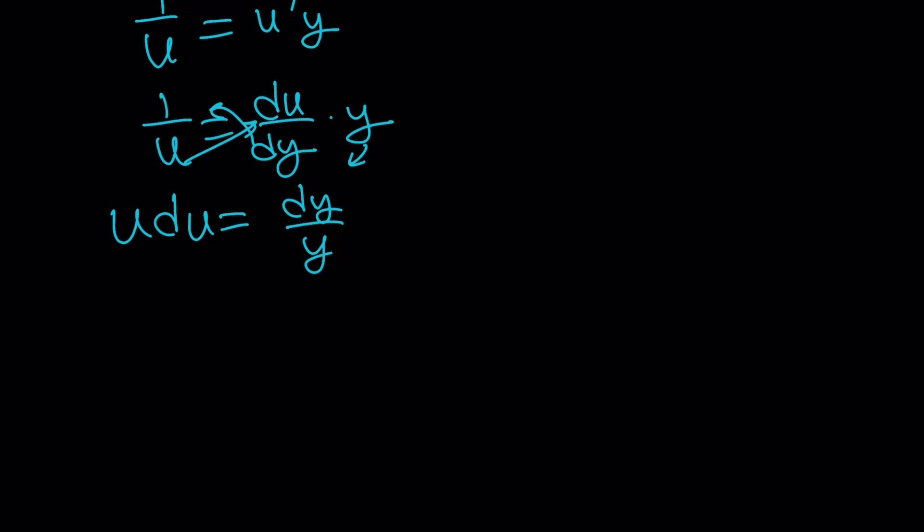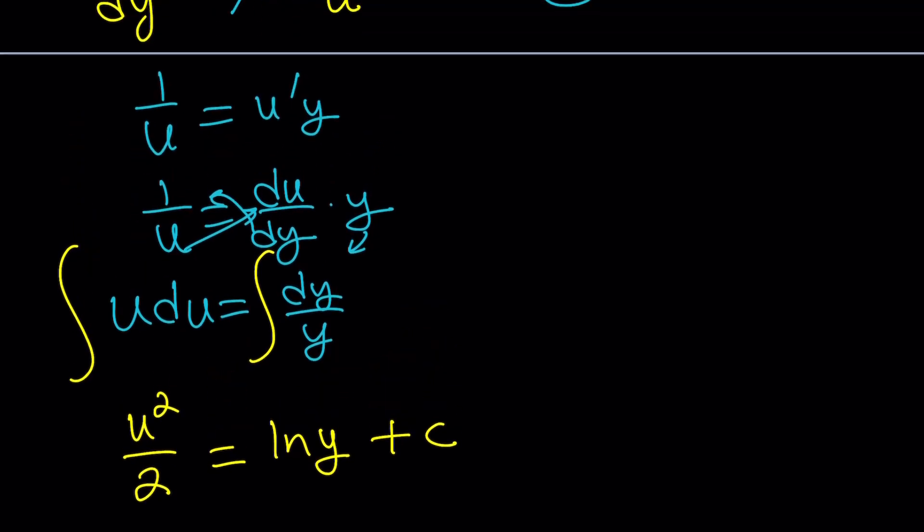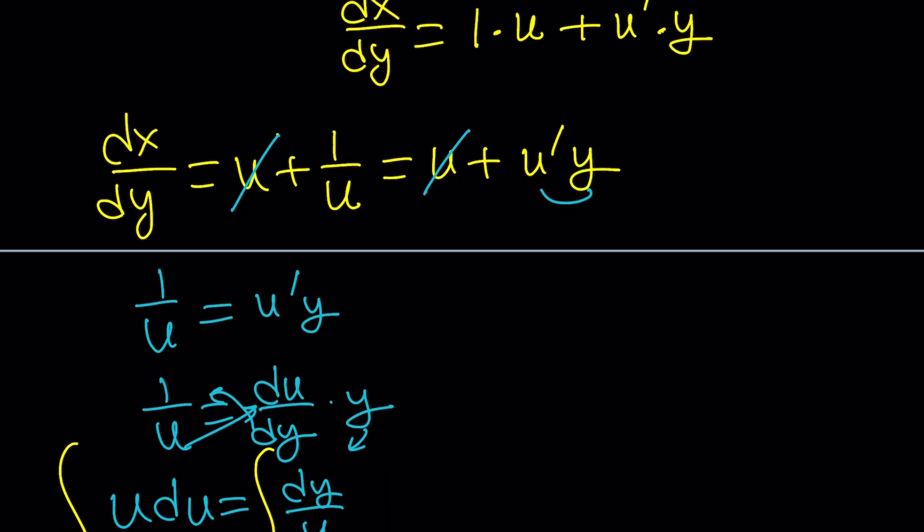Let's go ahead and integrate both sides now. This is going to be fun. If you integrate u du, you're going to get u²/2. I'm not going to put the constant here. And then this will become ln(y). And then let's put a constant. Awesome. What is u though? What are you? Who are you? So u is x/y.